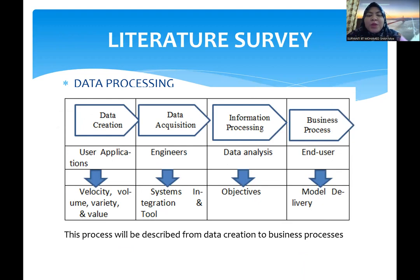Literature survey: The process will be described from data creation to business process. First, data creation — data will be designed when users use applications, consisting of velocity, volume, and diversity. Second, data will be obtained from various sources and technical tools. The data will often be processed and analyzed to achieve the target and objective. The last part is output — output will be transferred to the user using the tools.